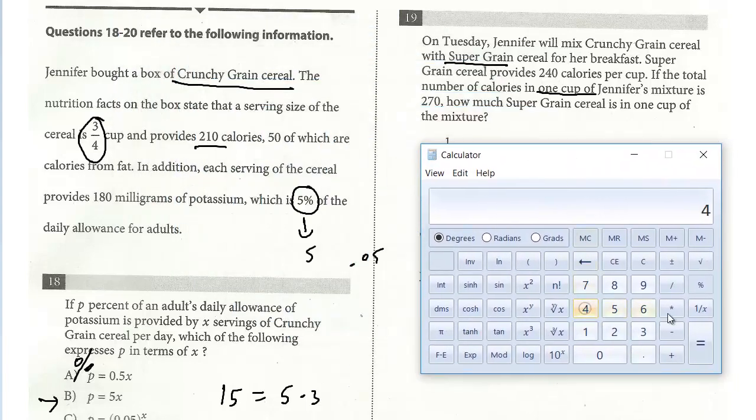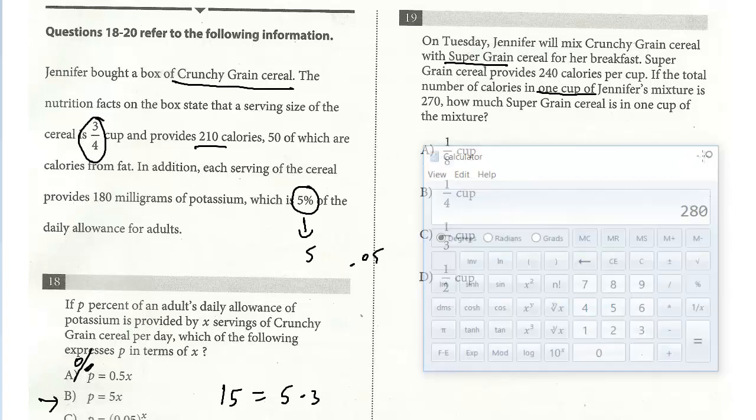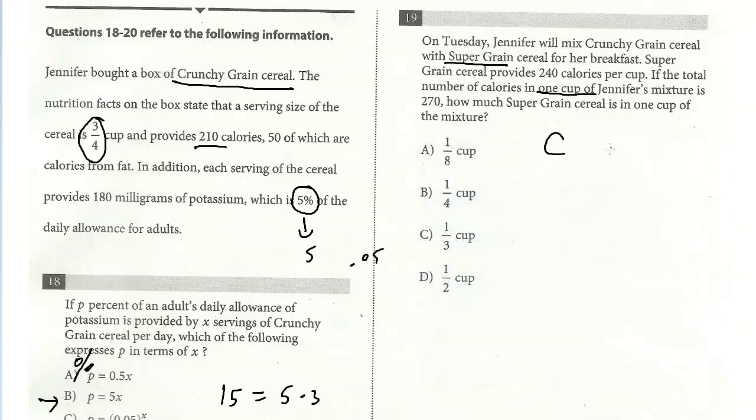So we'll just do that. So four divided by three, and then I'm multiplying that by 210. So this is the number of calories, 280, that crunchy grain, I'll just call it C, has per cup. Remember, Jennifer's eating a full cup, but she's also mixing it with super. And super is given as a cup, so that's 240. So she's just mixing one cup with 240 and 280, but we're told that the total mixture is 270. We want to know how much of the super grain.